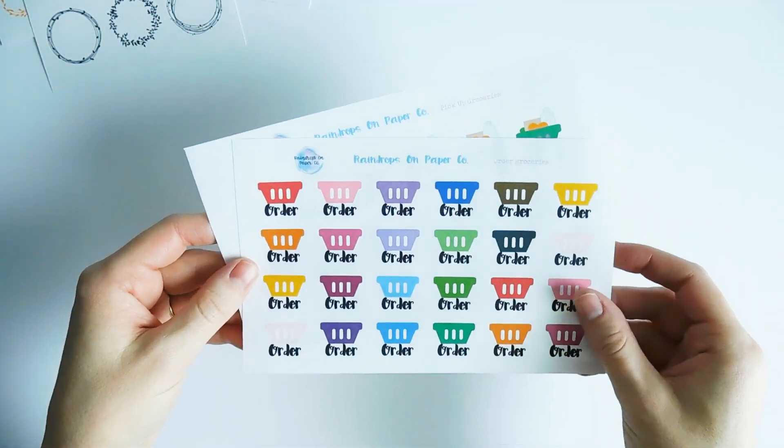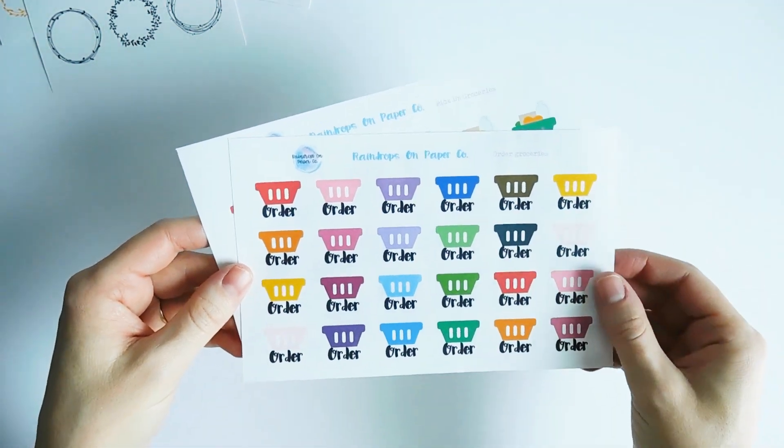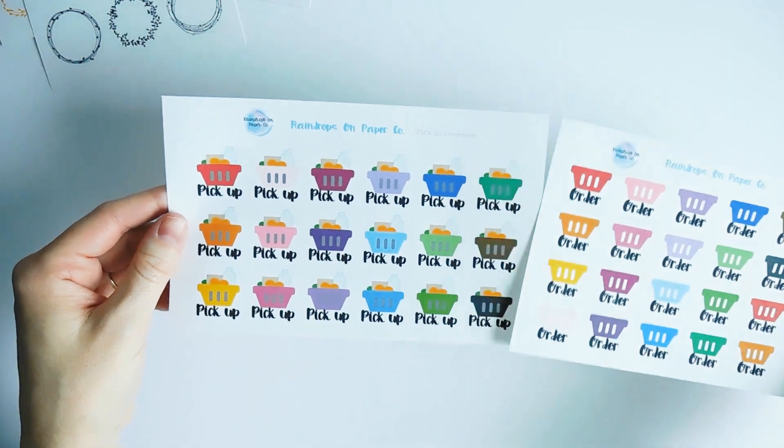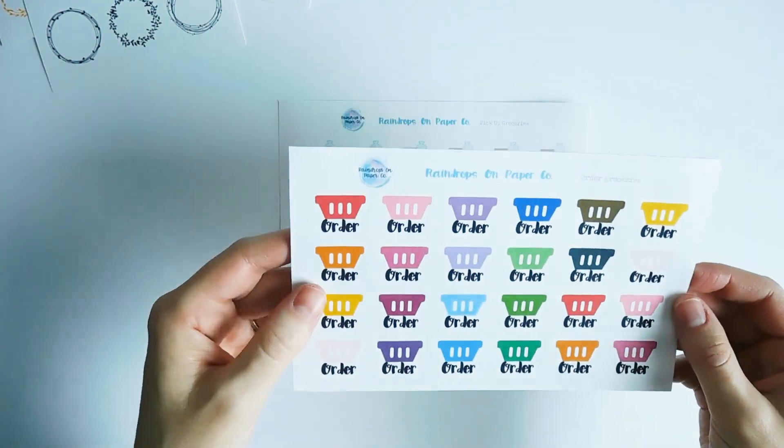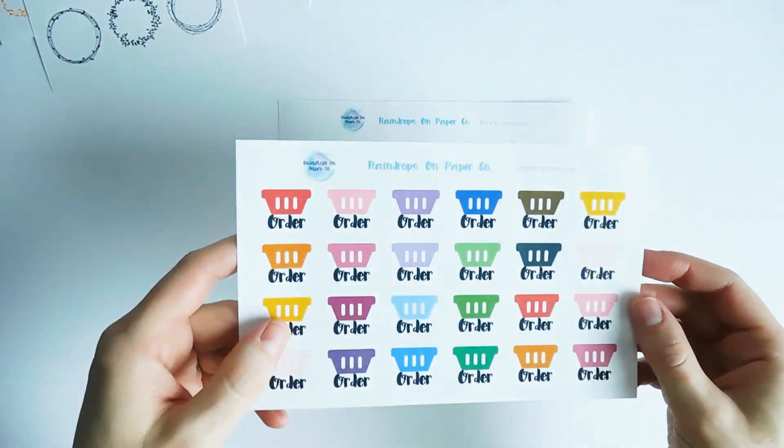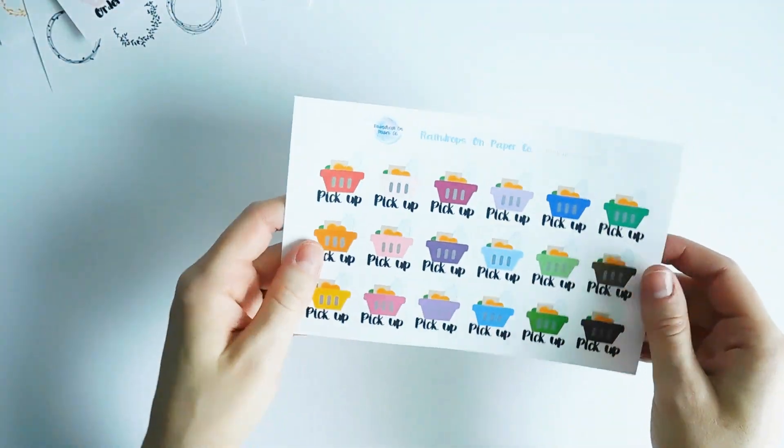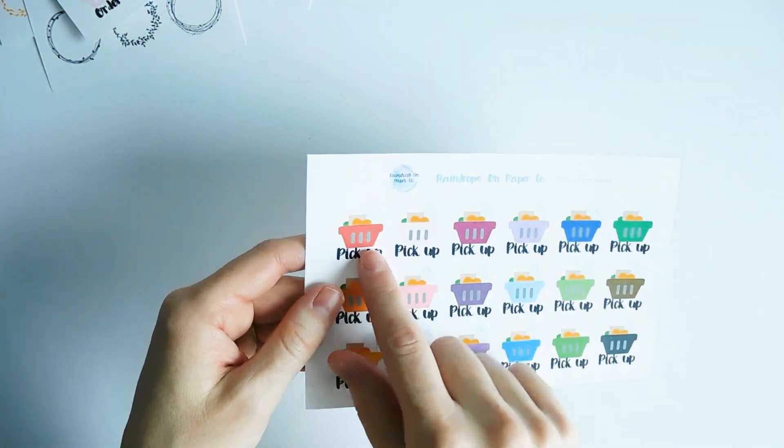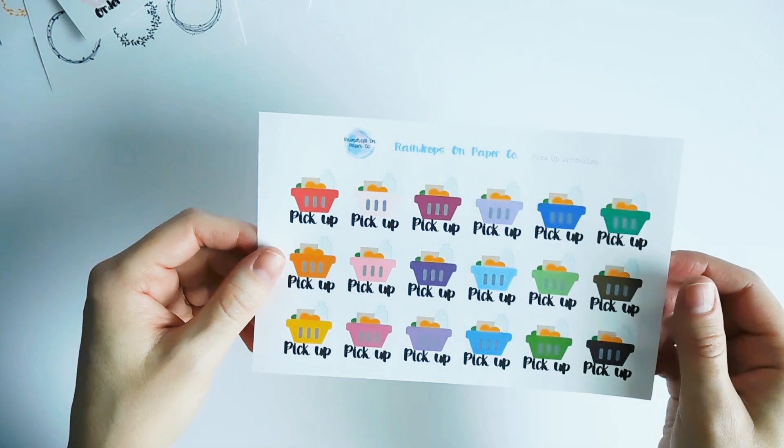And then for groceries I created these order grocery stickers and the pickup grocery stickers. For the order stickers it's empty because obviously you don't have groceries, so then you need to order them and pick them up. And these baskets on this sheet are full of groceries, of course.